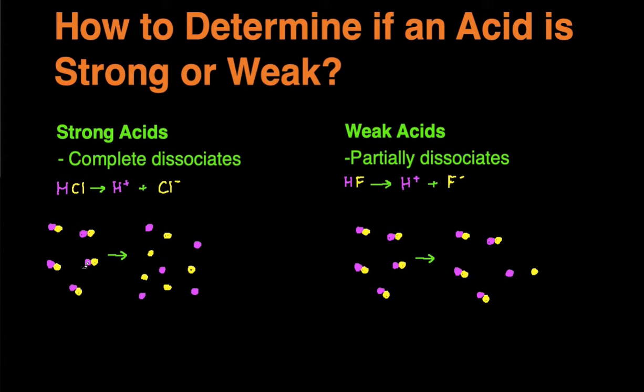If you take a look at the picture down here, I have five molecules of HCl, and since HCl is a strong acid, all five of them will completely dissociate, giving you 5 H+ and 5 Cl-.